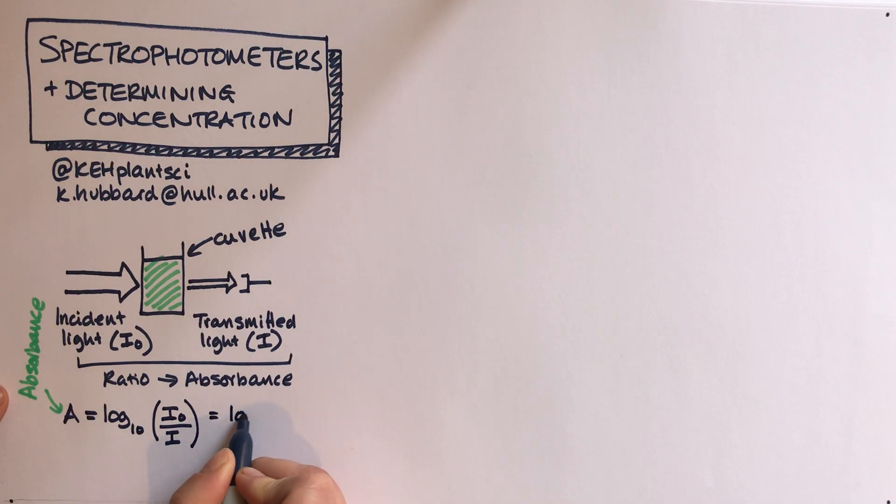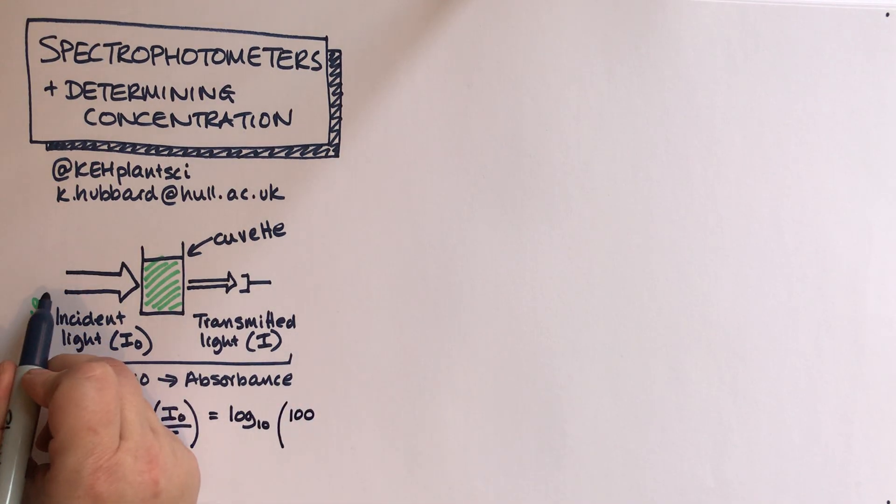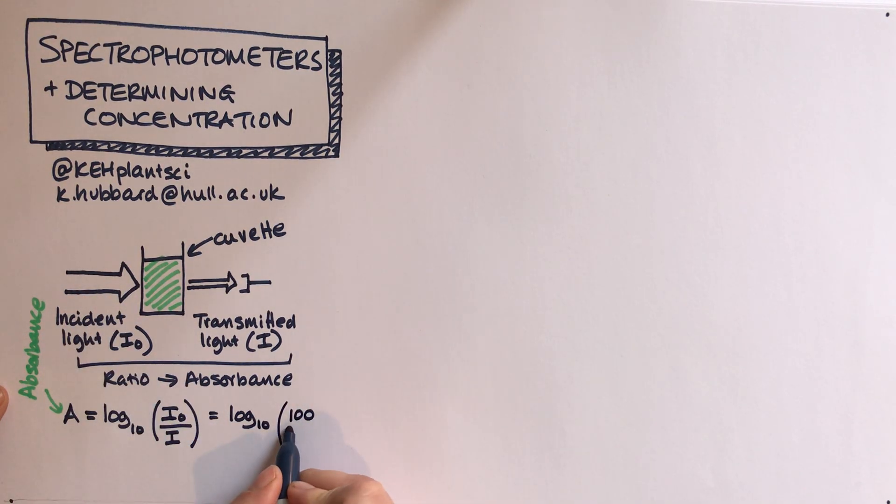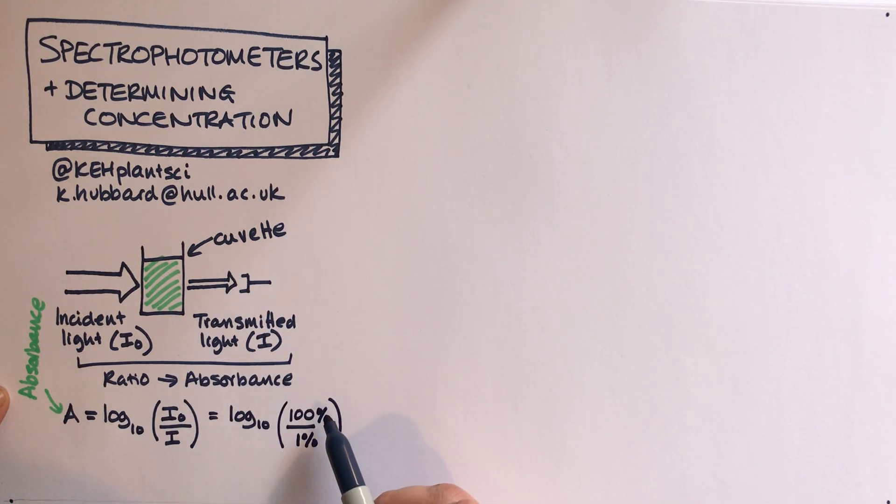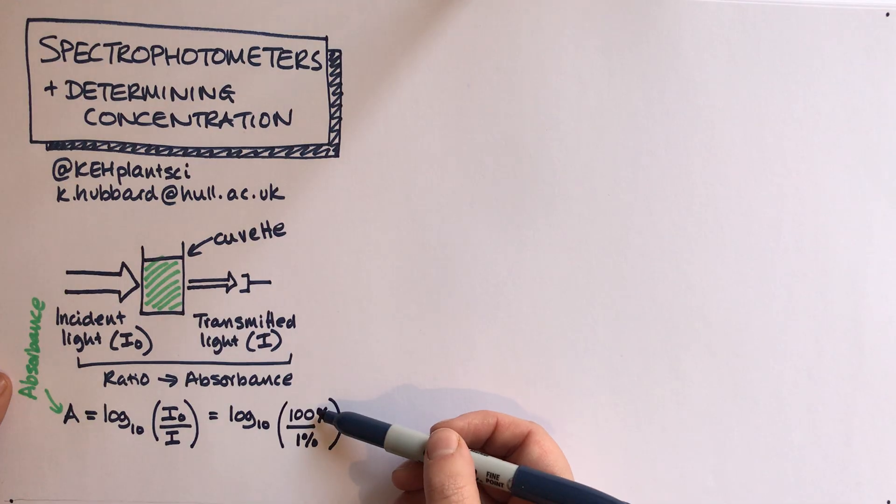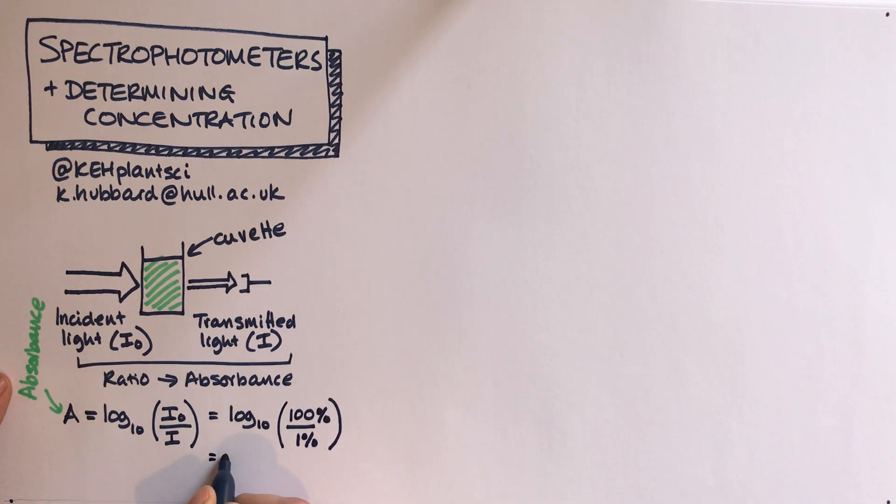Let's have an example of this. Let's imagine that the incident light we'll define as 100 percent, so 100 percent of the light went in, and at the detector only 1 percent of the light that was shined in got detected. So 99% of it has been absorbed.